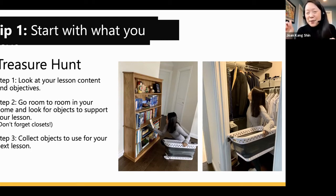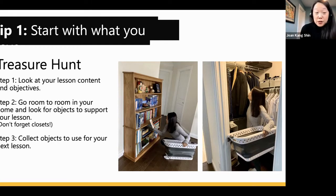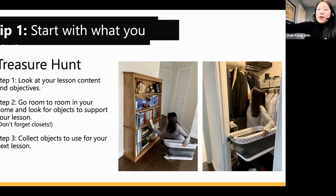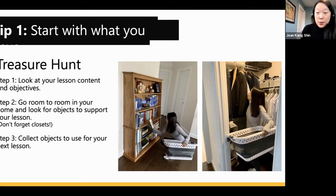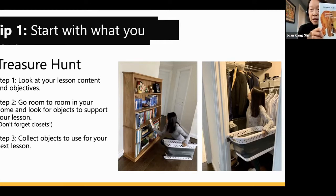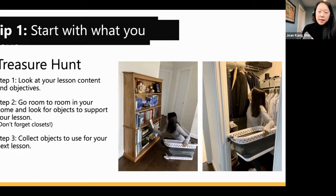Step one is always to look at your lesson objectives. Then simply go room to room in your home and look for objects to support your lesson. Don't forget closets — if you're teaching about job interviews, get a suit from your husband's closet. Going around, you might find treasures. I found an oldie but goodie — Brown Bear, Brown Bear — on my bookshelf that I'd forgotten about.